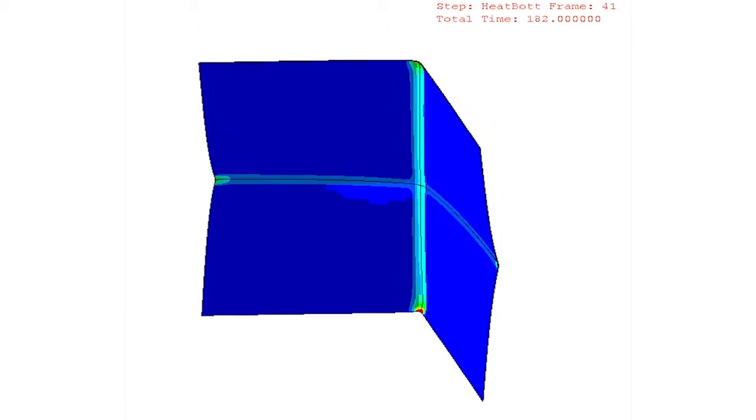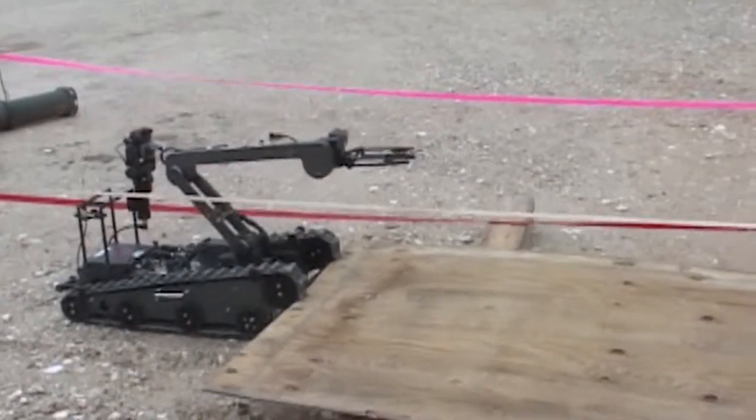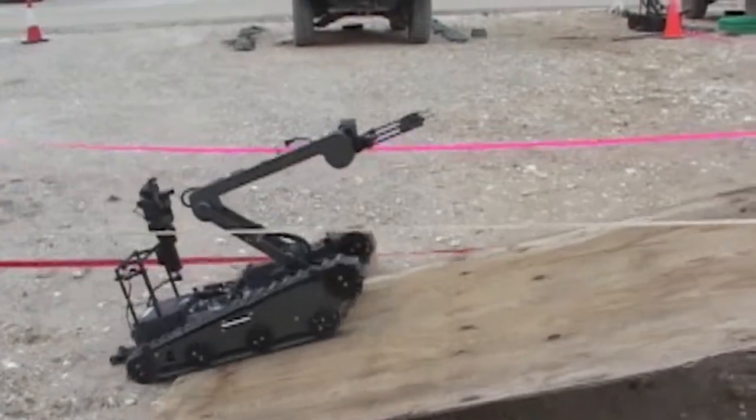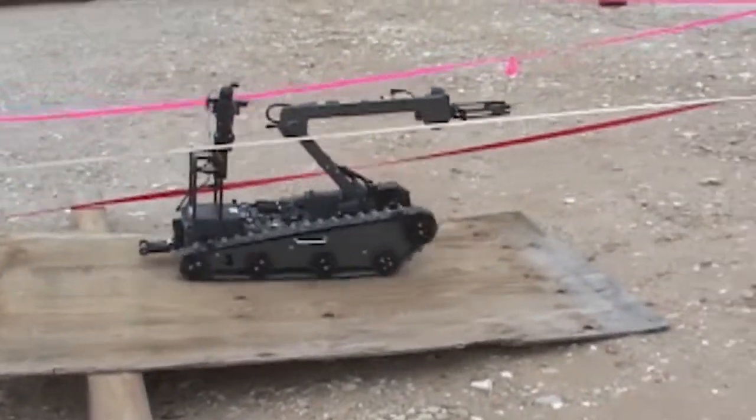Another example would be rescue robotics. You can send an exploratory robot in, but there's a potential that you're going to encounter an opening that's too small or oddly shaped to fit a robot through.